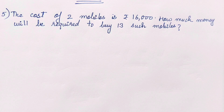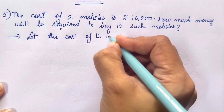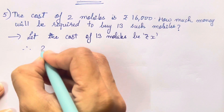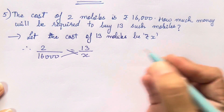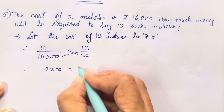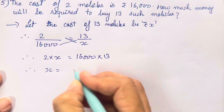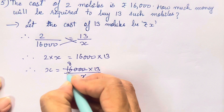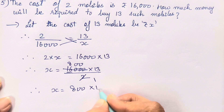Now let's move on to the last sum of this exercise. The cost of 9 mobiles is rupees 16,000. How much money will be required to buy 13 such mobiles? So let the cost of 13 mobiles be rupees x. Arrange: 9 upon 16,000 = 13 upon x. Cross multiply: 2 into x is equal to 16,000 into 13. X = 16,000 × 13 upon 2. 2 ones are 2, 8 are 16 — remaining 3 zeros. So x = 8,000 into 13.